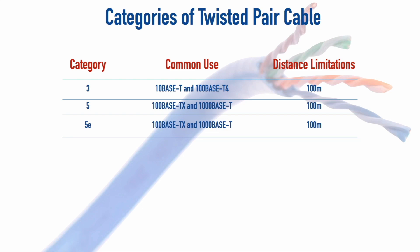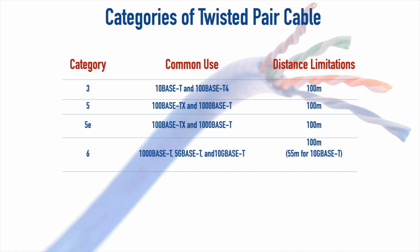Going up to Category 6, you can do 1000BaseT at one gigabit per second, but also 5GBaseT at five gigabits per second or even 10GBaseT at 10 gigabits per second. However, with Category 6 doing 10GBaseT you're limited to 55 meters rather than 100 meters. You can overcome that 55-meter limitation by moving up to Category 6A, which supports the same speeds and allows 10GBaseT to reach the full 100 meters.